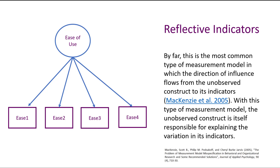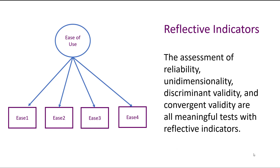With this type of measurement model, the unobservable construct is really responsible for explaining the variation in its indicators — it's reflecting them. There is an assumption that the indicators are positively correlated with one another, all moving in the same direction to capture the ease of use construct. Traditional validity concerns such as reliability, unidimensionality, discriminant validity, and convergent validity are all meaningful tests when measuring reflective indicators.